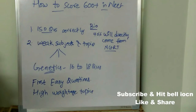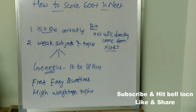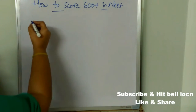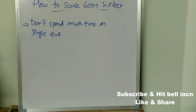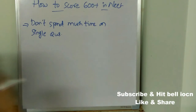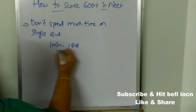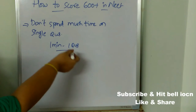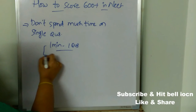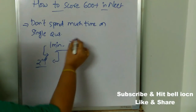In every subject — Physics, Chemistry, and Biology — there are a few high-weightage topics; concentrate on those first. Another important tip is don't spend too much time on a single question. Within NEET's limited time you need to solve many questions across three subjects. Before going to the exam center, decide how much time to give per question — for example, one minute per question. After that time, automatically move to the next question.